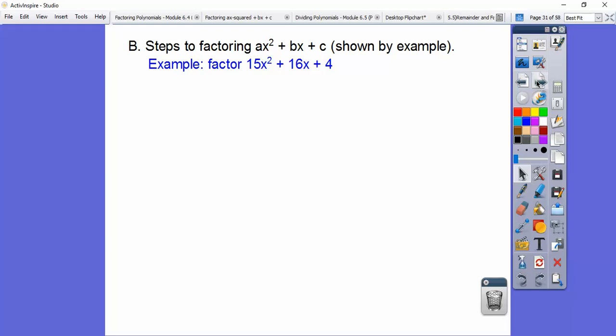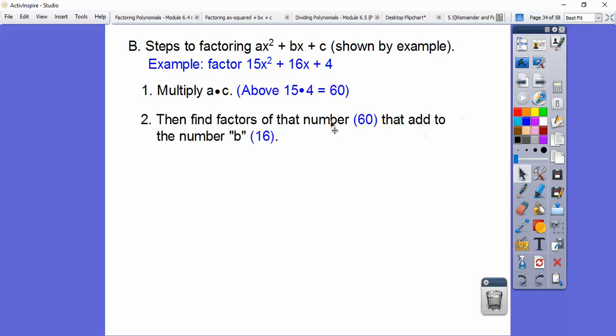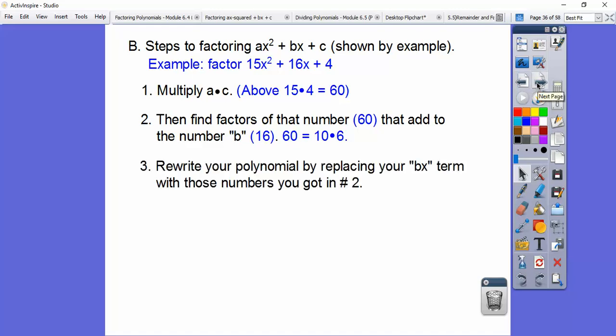So here's how to factor ax² plus bx plus c. And we're going to use the example 15x² plus 16x plus 4. So first thing you've got to do is multiply this number times this number. So here it's 15 times 4. 15 times 4 is 60. All right, the second thing we do, we find factors of this number right here, 60, that adds to this 16. So what, when we multiply to 60, adds up to 16? Well, 10 times 4, 10 times 6, add up to 16, 10 plus 6. So what we're going to do is rewrite the polynomial. We're going to replace this 16x right here with these numbers, 10x and 6x. So we'll just rewrite it right there. There's plus 10x plus 6x.